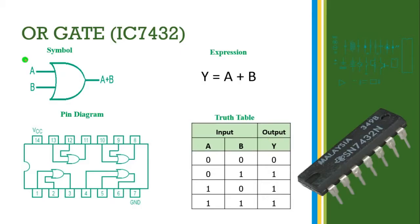This is the symbol of the OR gate. It has a 2-input OR gate; a 3-input OR gate is also available. Here input A and input B are the two inputs, and the output becomes Y. Y is equal to A plus B. Here we are going to perform the addition operation.